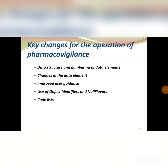Now we are going to see what changes have been made in these guidelines. They have completely restructured the numbering of the data and the data elements. They have changed some data elements — removed, amended, and repeated some — and they have improved the user guidance, so you can see a lot of guidance for entering data. They have also introduced new concepts called object identifiers and null flavors, and with those they have created a code list. These are the things we will cover in this video.